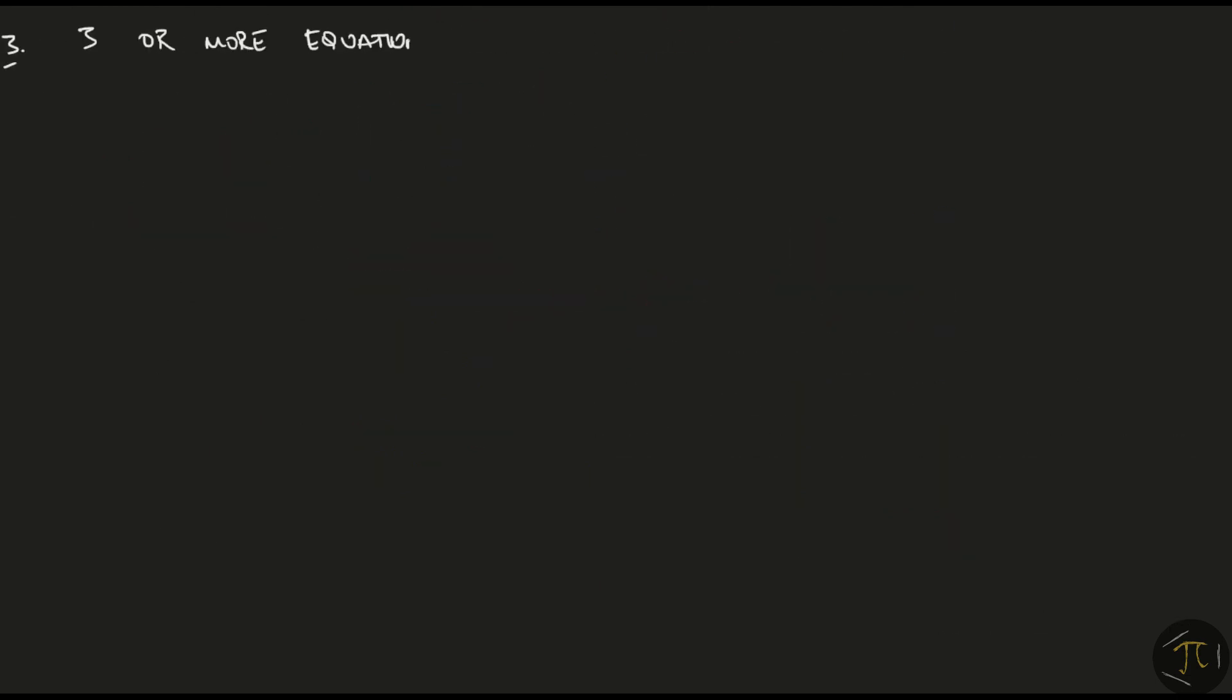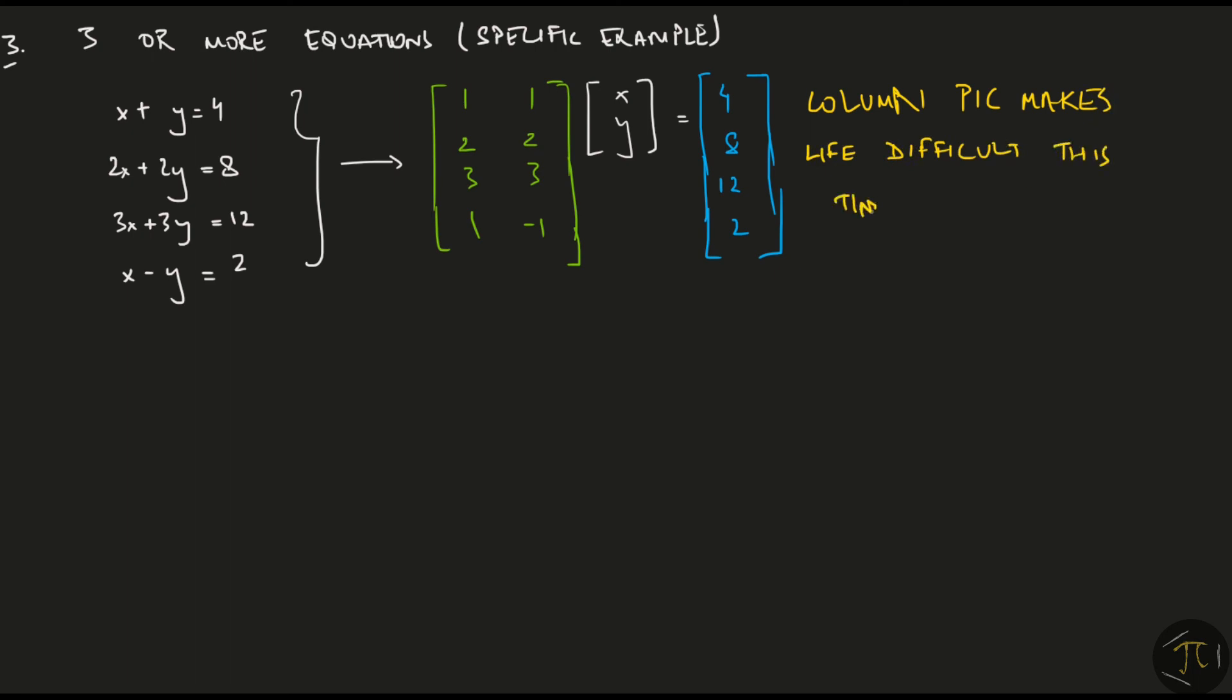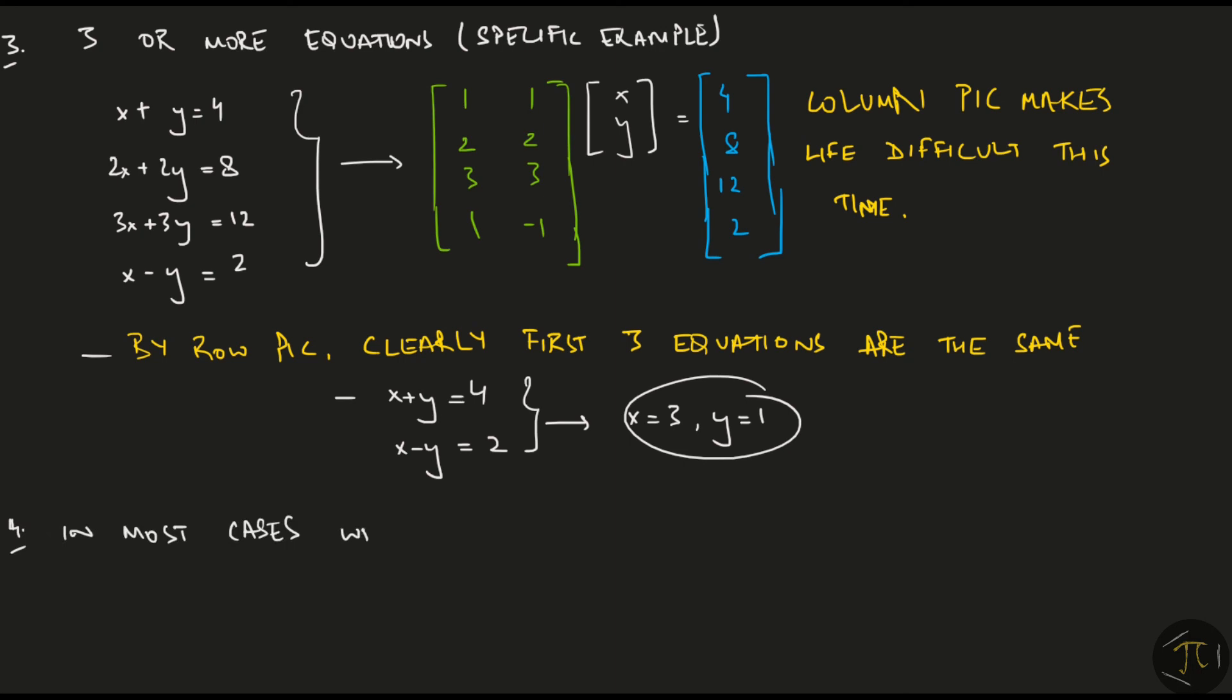Another weird system with three or more equations could look something like this. Since the vectors of the matrix are linearly independent, the column picture makes life difficult this time. So by the row picture, clearly the first three equations are the same. We can discard two of them and then easily solve the system. In most cases though, when the number of equations is greater than the number of variables, such tricks might not work, and we may have to use Gaussian elimination. That is something we will learn in future videos.